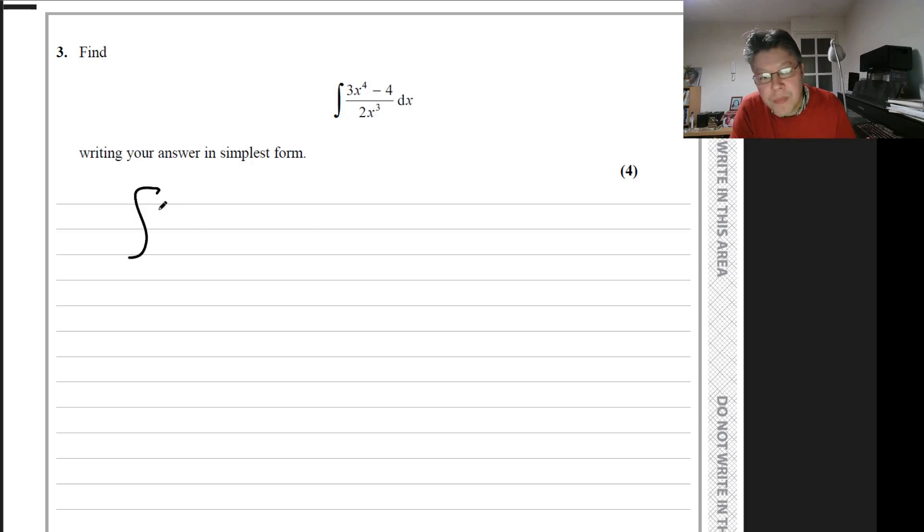split up the fraction first of all. So that's 3x to the 4 over 2x cubed, minus 4 over 2x cubed.